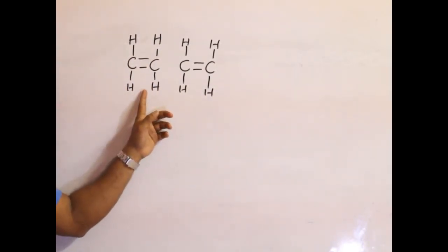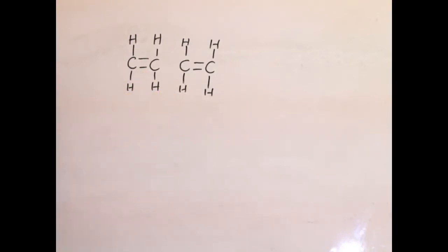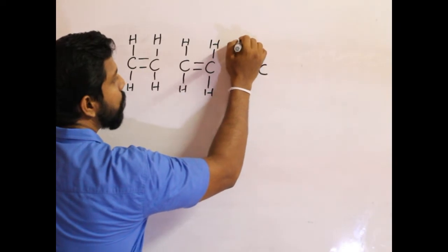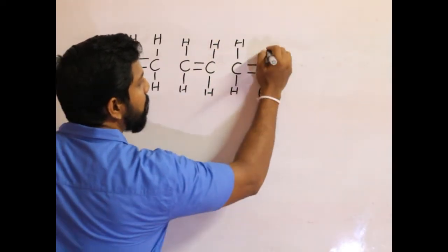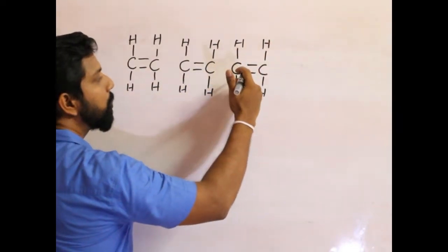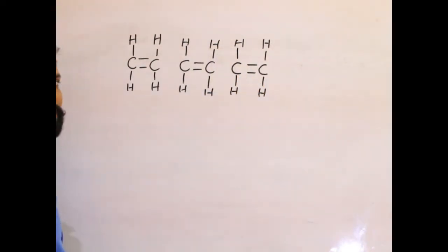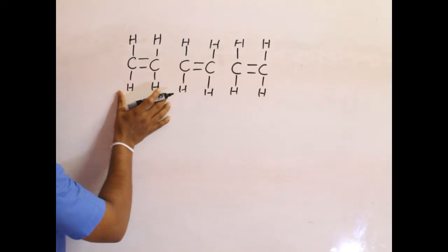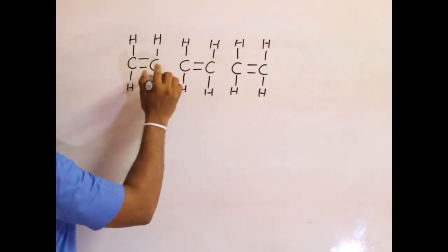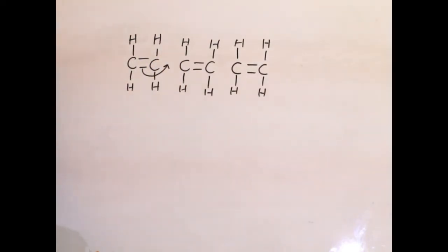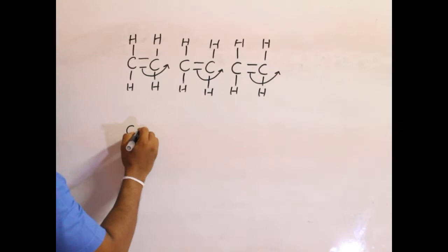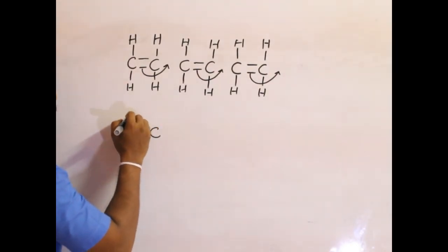Here is an ethene molecule. Let me draw an ethene molecule in a way that makes polymerization easier to understand — the carbon atoms are shown with the other atoms placed above and below them. One ethene molecule can break one of the two bonds in the double bond and combine with another ethene molecule. The same thing can happen over and over again, making these molecules combine.